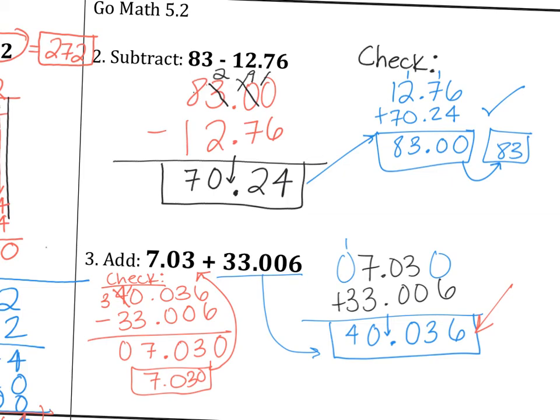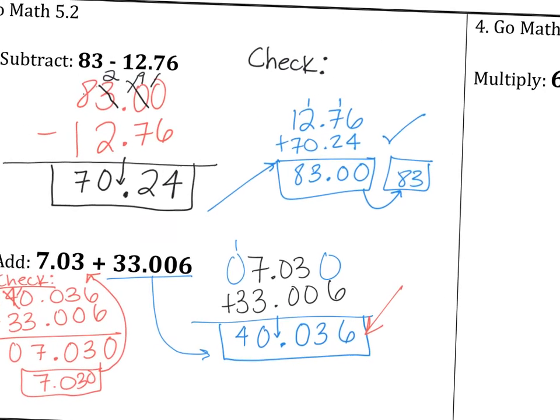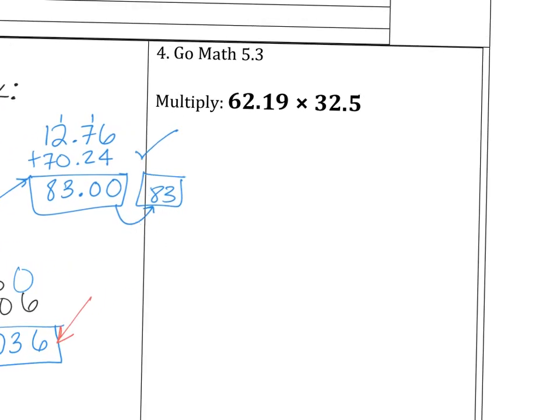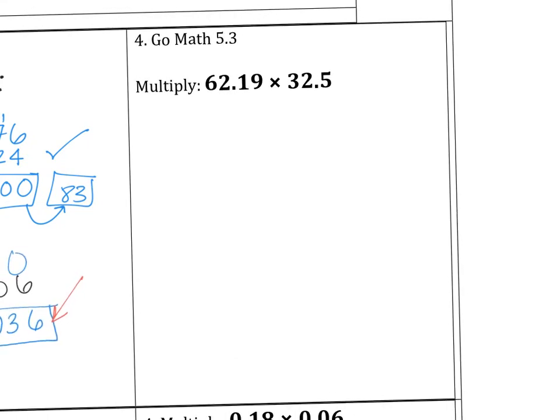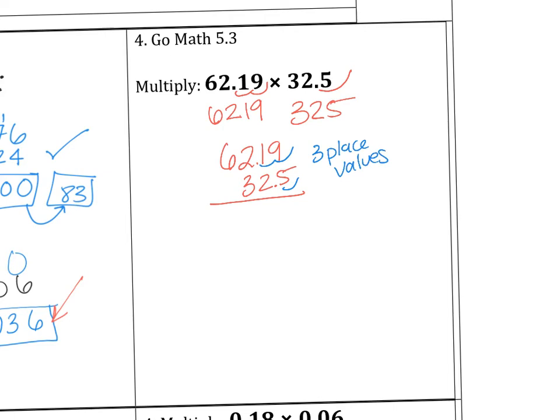Number 4, you're going to have to multiply decimals. So number 4, you don't have to line up the decimals. So just multiply 6,219 and 325. And then at the end, how many place values did I go? 1, 2, 3. You're going to bring that into account. So we have 62.19 and 325, and the decimals right there. So again, remember we did that activity last week? We went 1, 2, 3. Three place values.